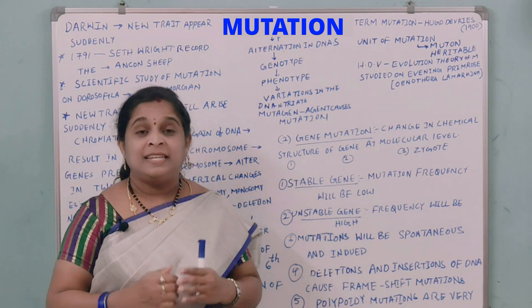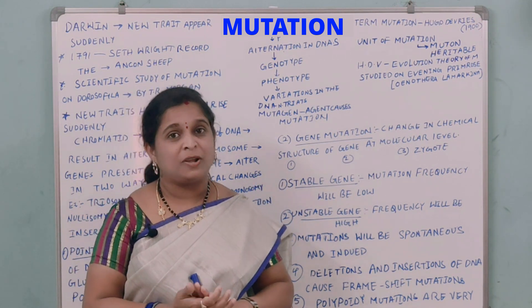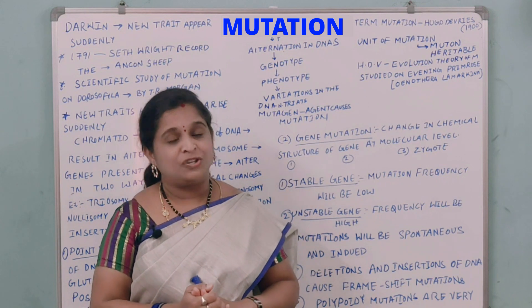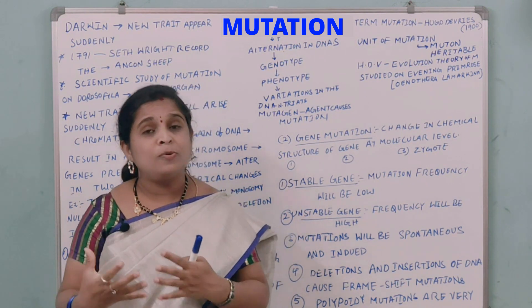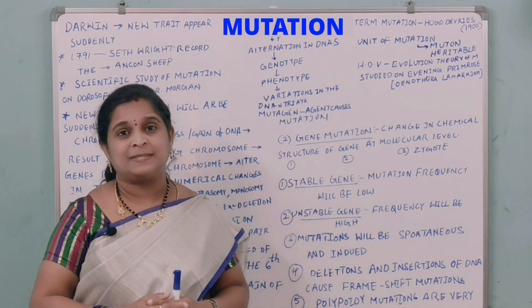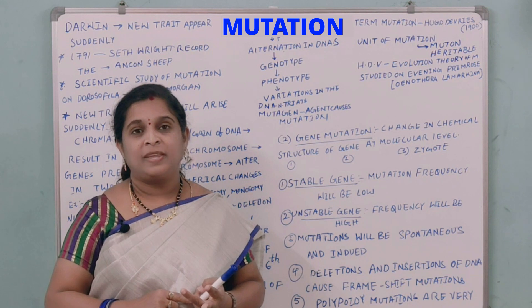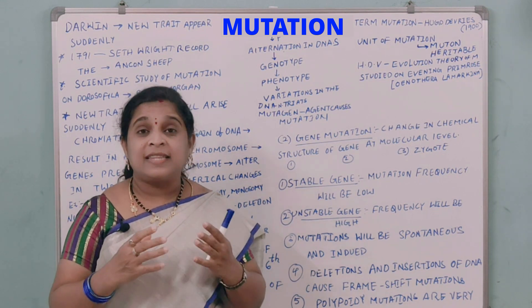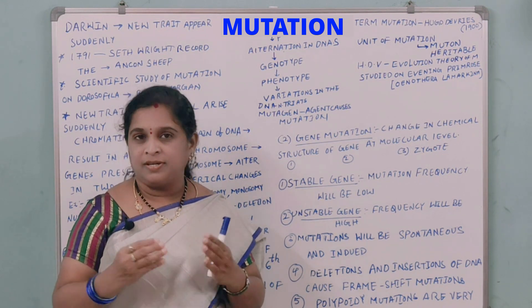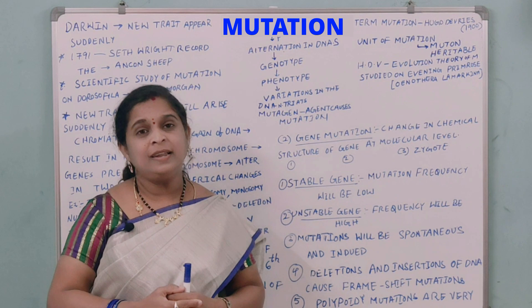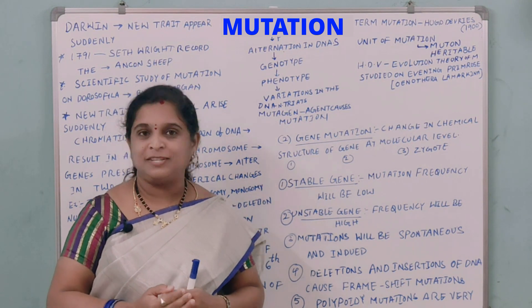These are the disorders caused by genetics. Chromosomal disorders include Turner syndrome and Klinefelter syndrome, which are examples of chromosomal aberrations or chromosomal disorders.